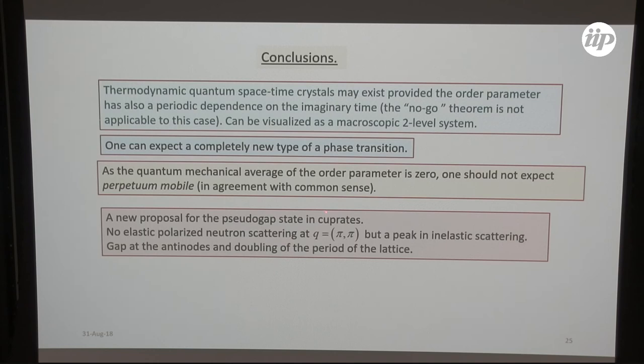Maybe it is a new proposal for pseudogap state in cuprates, somehow something like DDW state which gives a doubling of the period and all these nice things. But it cannot be seen by using elastic scattering, but there should be some peaks in inelastic scattering, although it may be weak. Gap at the anti-nodes, doubling period, and that's the end. Thank you.